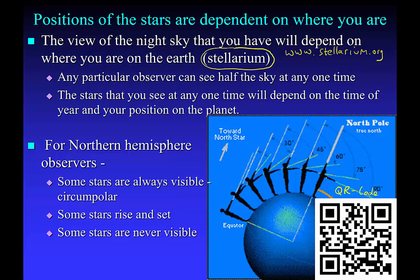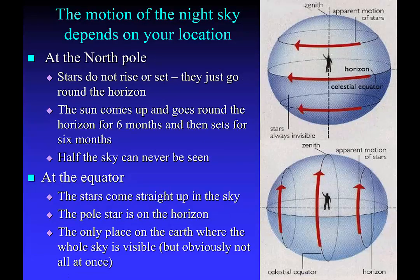For somebody at the North Pole of the Earth, they will see the sky differently than from somebody in Tampa, or somebody at the equator of the Earth. The sky that they see will be different because you're sitting on a ball rather than on a flat surface. Here's what the sky would look like for somebody at the North Pole: stars appear to just rotate around the sky in circular orbits, and half of the sky is possible to see, but there's a half of the sky that you never get to see at the North Pole.